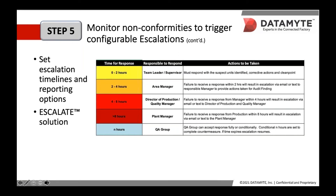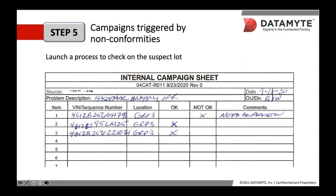Escalate will continue to elevate this alarm until someone responds or until it reaches the top of the chain. We're still on step five, moving into campaign management triggered by non-conformities. For organizations doing these types of campaigns manually on paper, their existing paper form might look something like the example shown here. However, there are limitations around these paper-based processes, including handwriting challenges, manual data entry to make the data useful on the back end, they're time-consuming, it's easy to fudge numbers, or possibly skip the audit altogether.